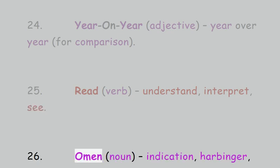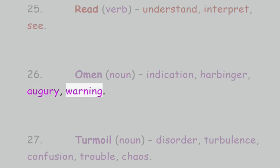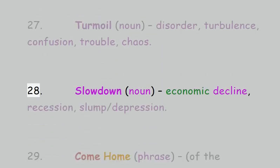26. Omen, noun: indication, harbinger, augury, warning. 27. Turmoil, noun: disorder, turbulence, confusion, trouble, chaos. 28. Slowdown, noun: economic decline, recession, slump, depression.